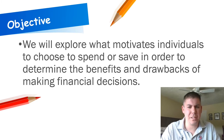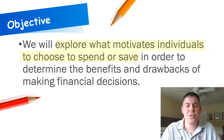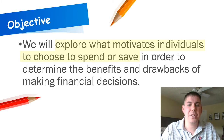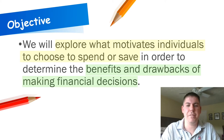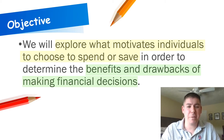Before we jump into this lesson today, let's just break down our objective a bit. Today we're going to look at what motivates individuals or people like us to spend or save money. When we're saying the word motivate, what we're really thinking about is what will encourage us to act. Benefits are good things. And when we reference drawbacks, we can think of the cost of making the decision. For example, if I stay up too late the night before a big test, I might benefit from getting to watch that show I really wanted to see, but the drawback would be that I might not do well on that assignment.